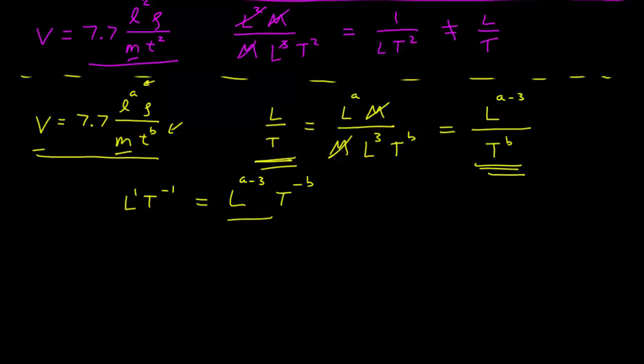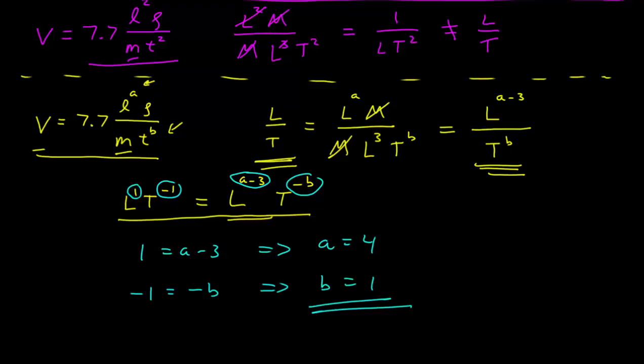And now, if I look at this, because both sides are equal, that means the exponents have to be equal. We know that 1 must equal a minus 3, and negative 1 must equal negative b. So 1 equals a minus 3, or a equals 4, and minus 1 equals minus b, or b equals 1. And so here, we can simply use dimensional analysis to solve our problem.